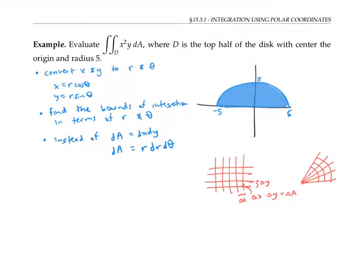If two of the rays have an angle of delta theta between them, and two of the circles have a difference in radius of delta r, then the area of the little polar rectangle bounded by the rays and arcs, which I'll still call delta a,